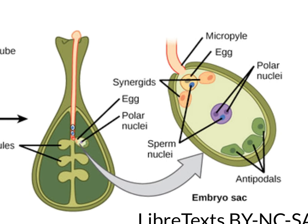The sperm cells eventually make their way all the way down the pollen tube towards the ovule. The ovule has the female gametophyte, or the embryo sac, within it. And those two sperm cells, shown in blue in this diagram, make their way into the embryo sac.